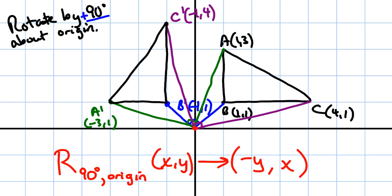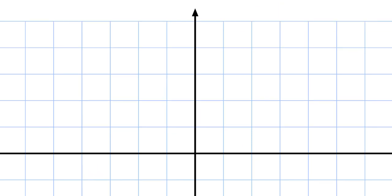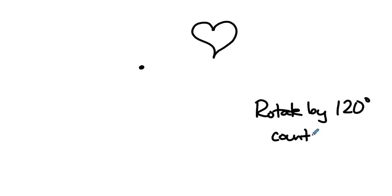It doesn't have to be in the coordinate grid. So consider you got some, I don't know, heart, and you want to rotate it about that point. Let's rotate by, I don't know, 120 degrees counterclockwise about point P. There's P.